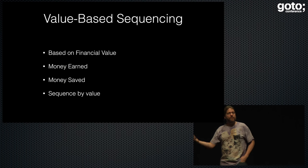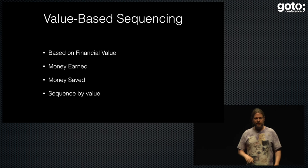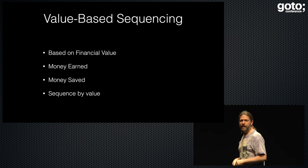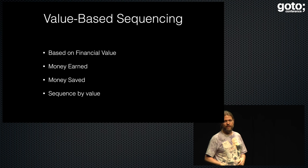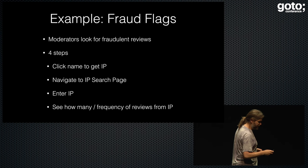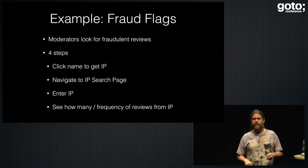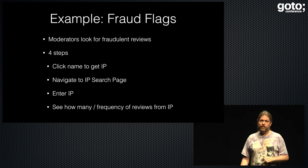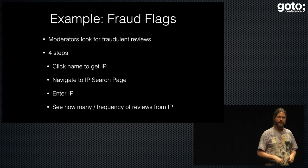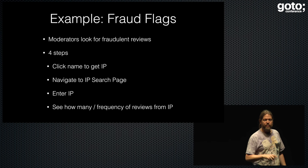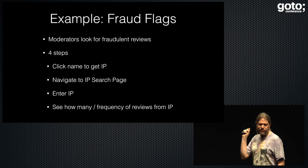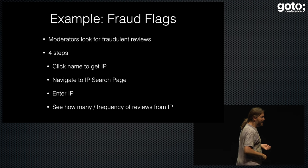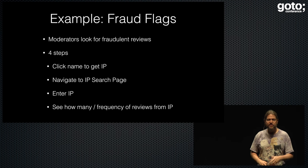That brings up another challenge: how do you do value-based sequencing? What is a value? We said in order to bring a card in, you have to have a dollar value on it — a monetary financial value, either earned or saved. Here's an example: our moderators, the ones who look at reviews and say whether or not they're good. We had a problem in that one of the things they looked for were fraudulent reviews — reviewers who would write ten good reviews and make money. To find out if it was fraudulent, they took four steps: click the name to get the IP address, navigate to the search page, put in the IP address, and look to see how many reviews they had.